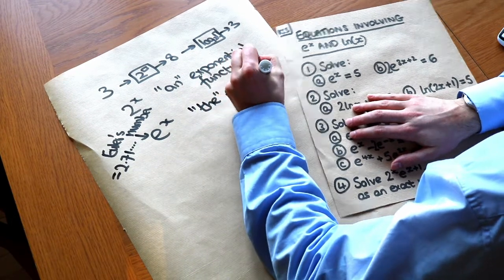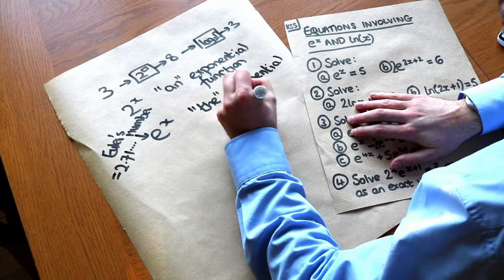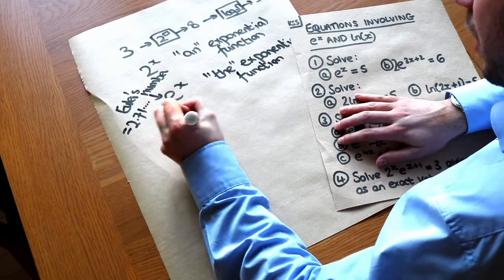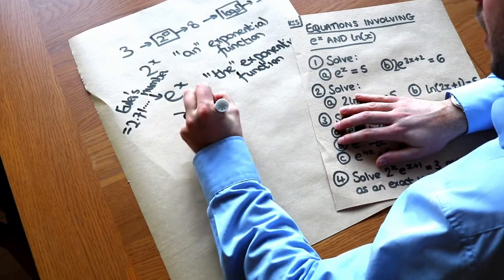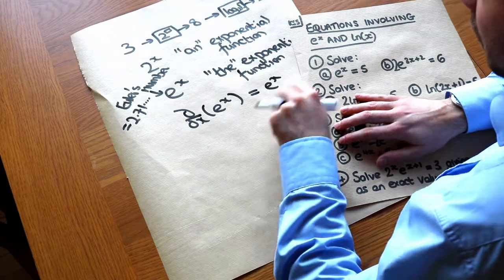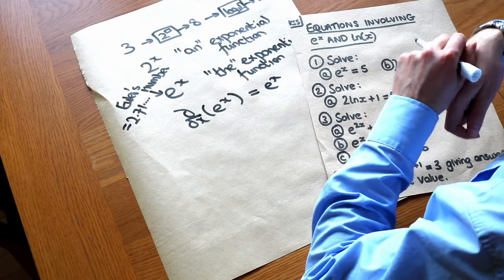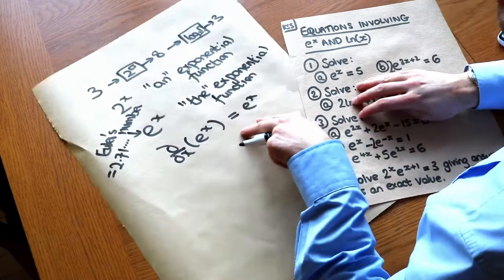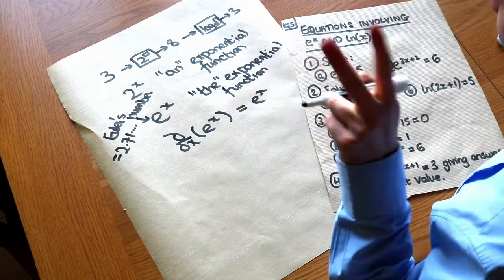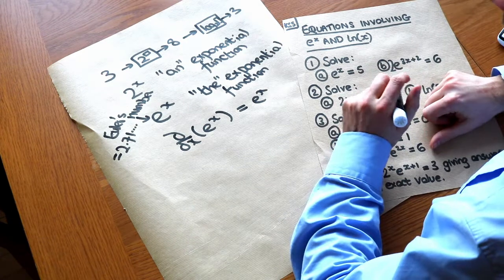Now we'll see the significance of e to the x in other videos, but the main property of e to the x is that when you differentiate e to the x it just becomes itself. The fact that it equals itself is important in solving differential equations amongst many other uses. So e to the x is known as the exponential function because it's like the granddaddy of all exponential functions — it's the most important one.